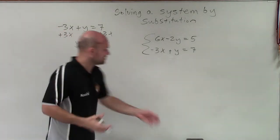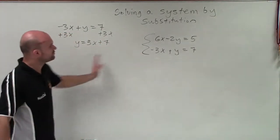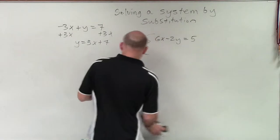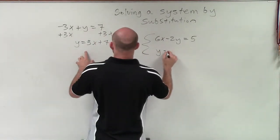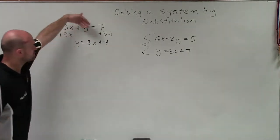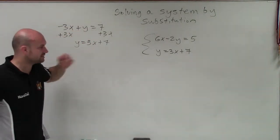Now that I've isolated my variable, I'm going to rewrite this equation with the variable isolated. So I write this as y equals 3x plus 7. It's the exact same equation, just written with one variable isolated.